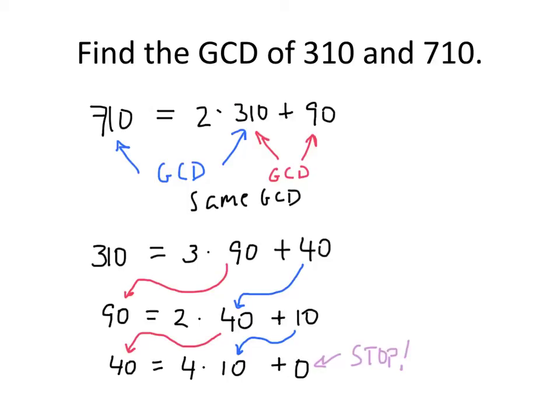And if we were to go one more step, then we would be looking at the greatest common divisor of 10 and 0. But everything divides 0. 0 is divisible by everything. So the greatest common divisor of 10 and 0 is really just the greatest divisor of 10. And the greatest divisor of 10 is 10. So that means that the greatest common divisor is equal to 10.